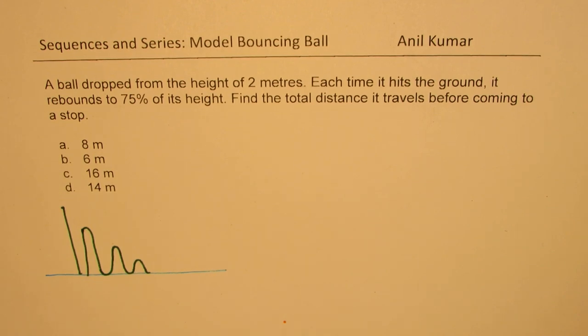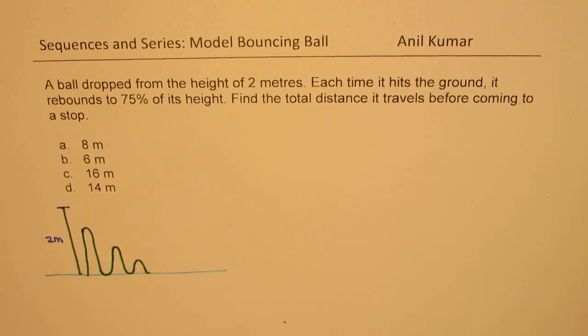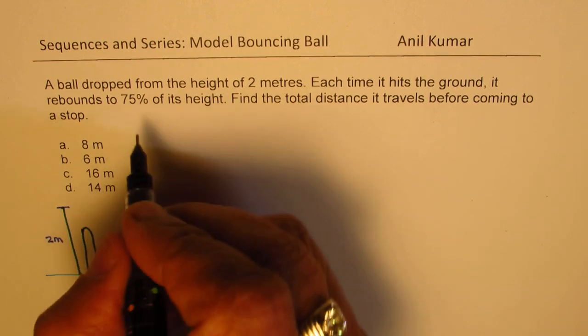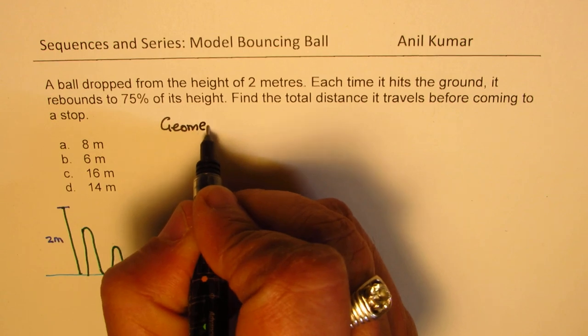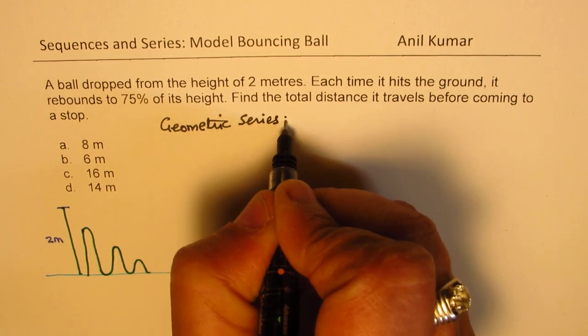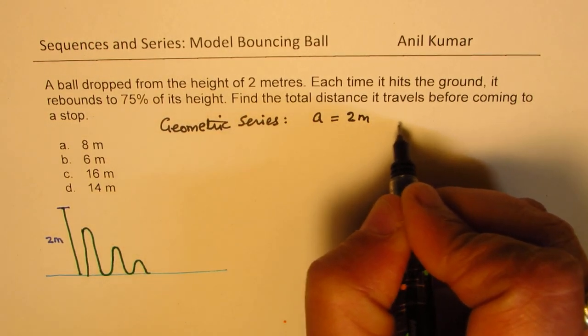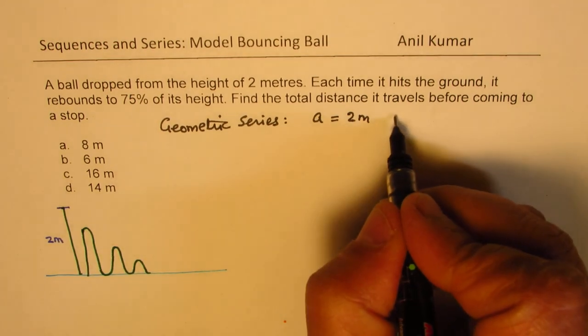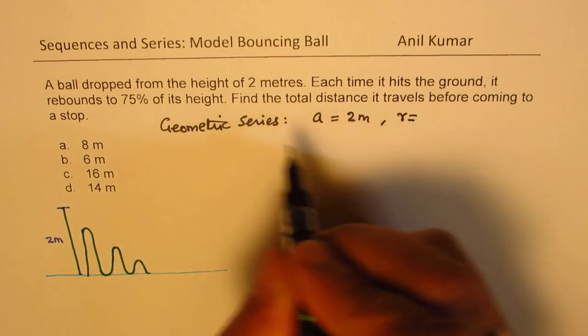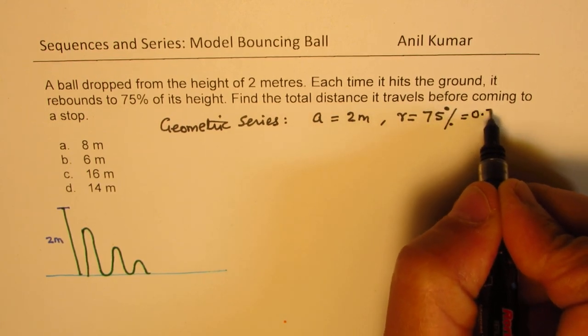It is decreasing by 75%. We are given that initially the height is 2 meters. We need to find the total distance. So clearly this is a geometric series. Where the initial value A is 2 meters for us and when it rebounds the factor by which is being multiplied is 75%. So 75% means 0.75.